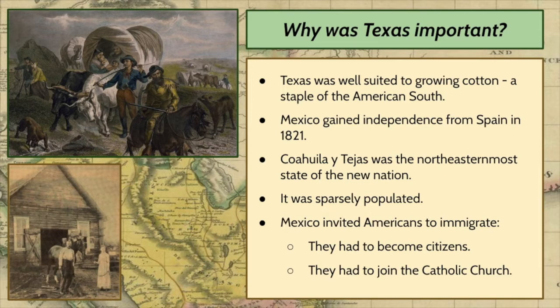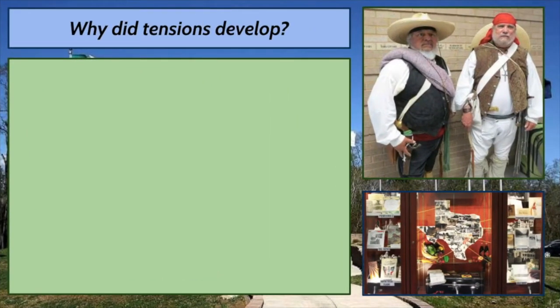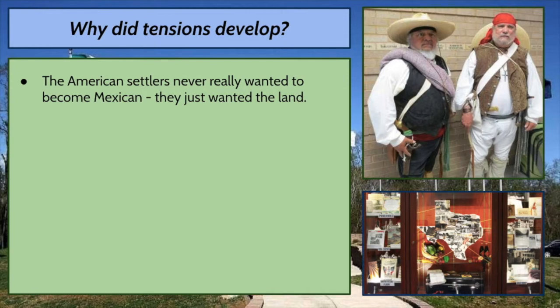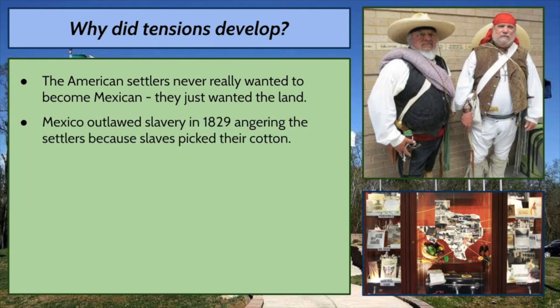This became a problem. The American settlers never really wanted to become Mexican — they just wanted the land. They agreed to what they had to agree to just so Mexico would give them permission to move in. Mexico outlawed slavery in 1829, and this angered the settlers because cotton was their main cash crop and they used slaves to pick that cotton. Slavery was a part of the lifestyle and culture of the settlers who moved into that area.